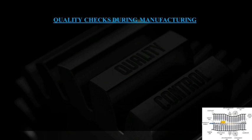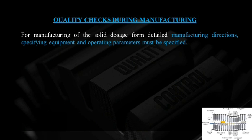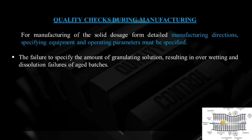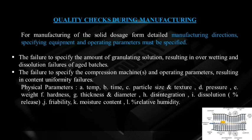The quality control checks during manufacturing — for manufacturing of solid dosage forms, detailed manufacturing directions specifying equipment and operating parameters must be specified in the batch manufacturing record. Failure to specify the amount of granulating solution results in over-wetting and dissolution failure of the aged batches. Failure to specify compression machine or operating parameters results in content uniformity failures. These parameters include temperature, time, particle size, texture, pressure, weight, hardness, thickness, diameter, disintegration, dissolution, friability, moisture content, and relative humidity.